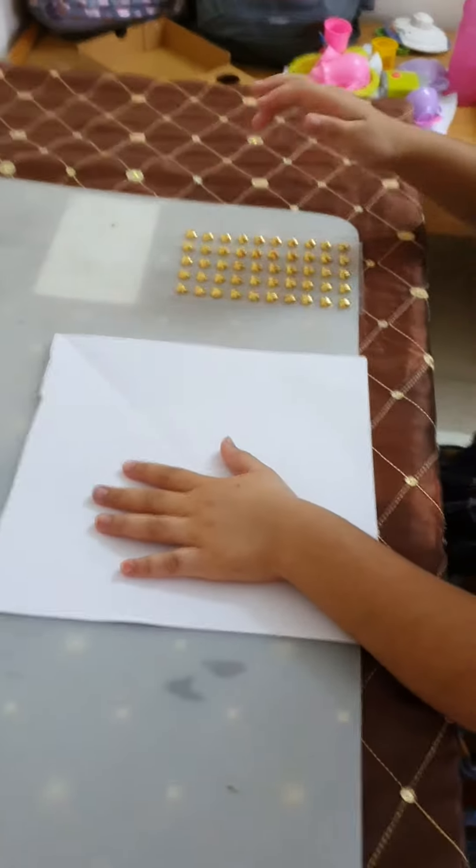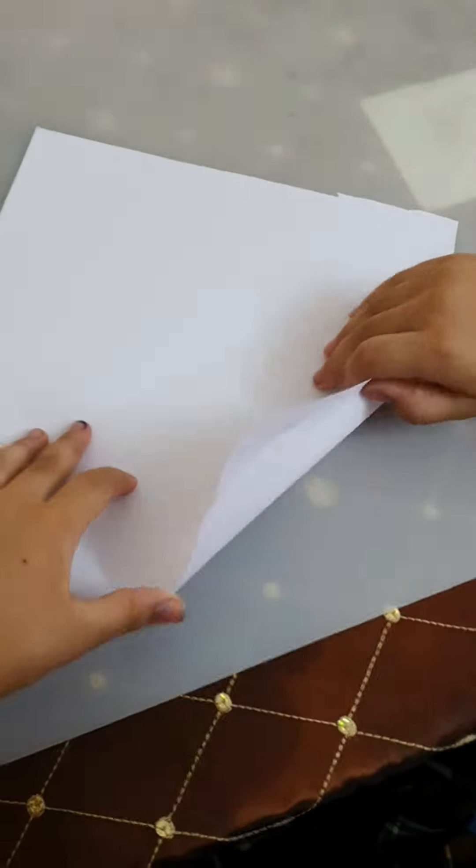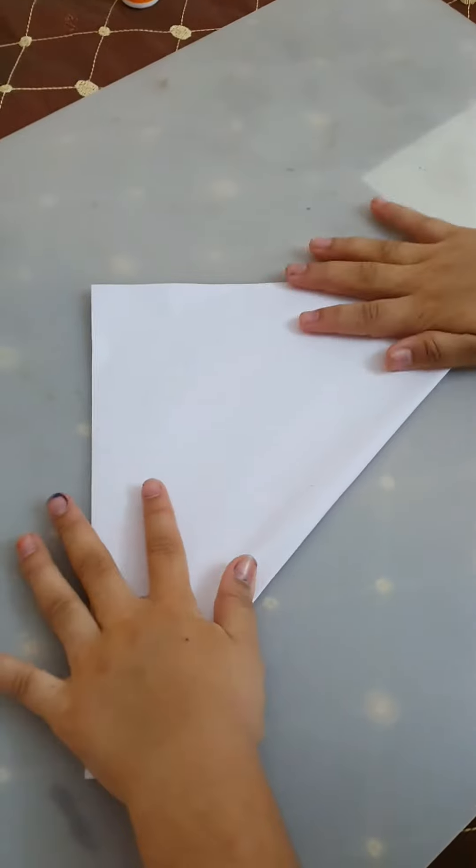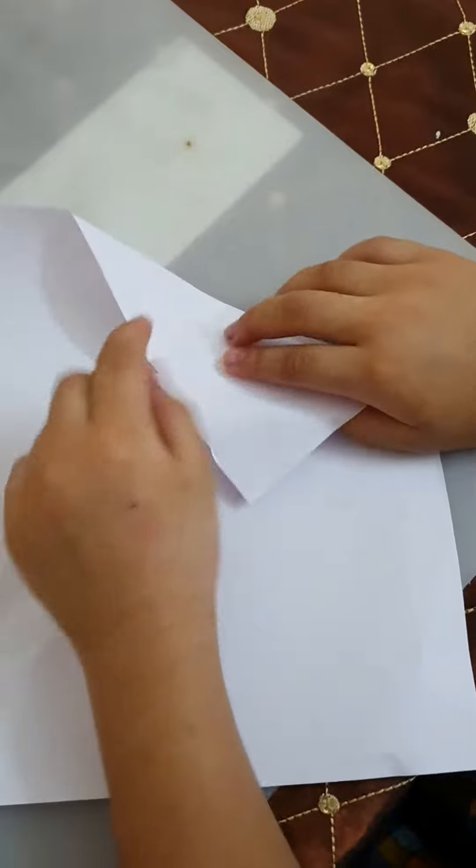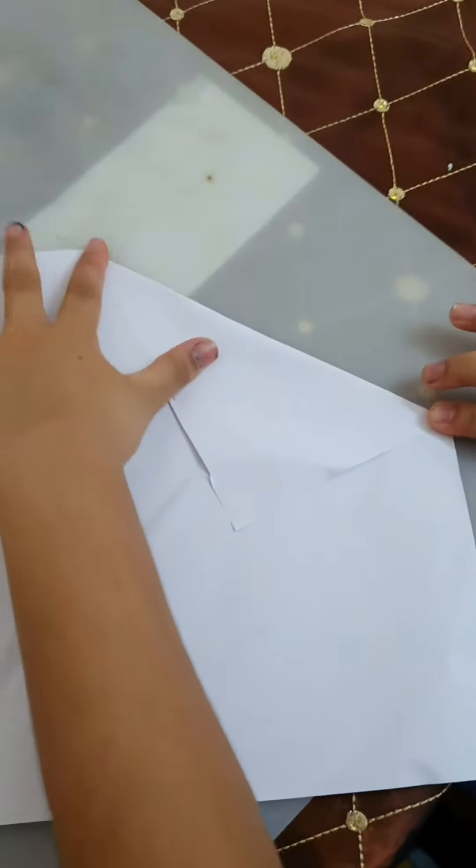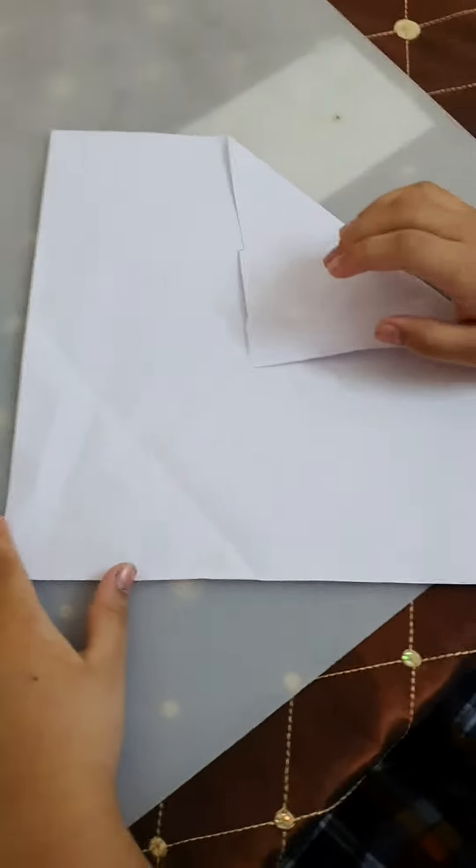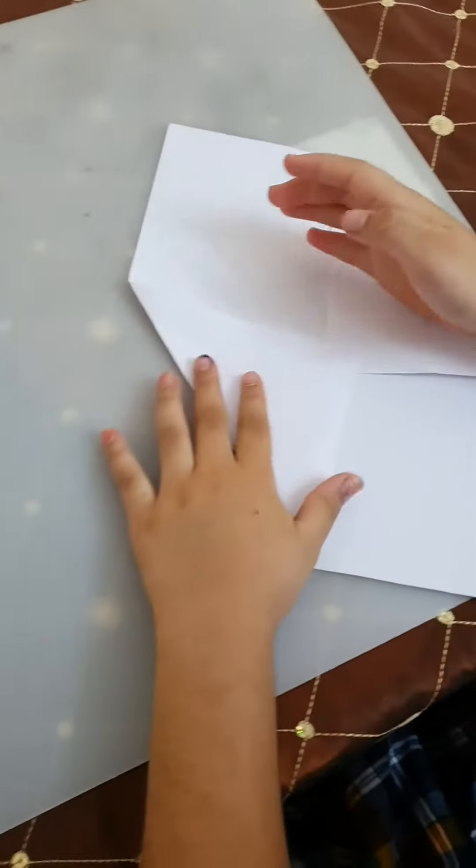We need a square paper and some stickers. First make a center line and then we need to fold aside like this. Repeat it one more time on the next side.